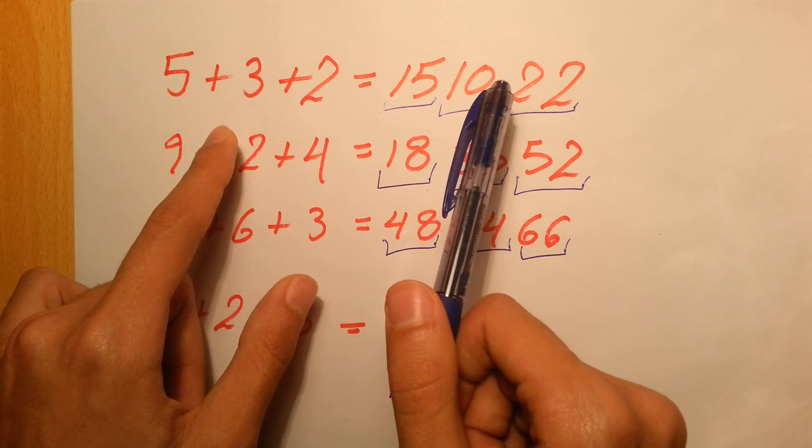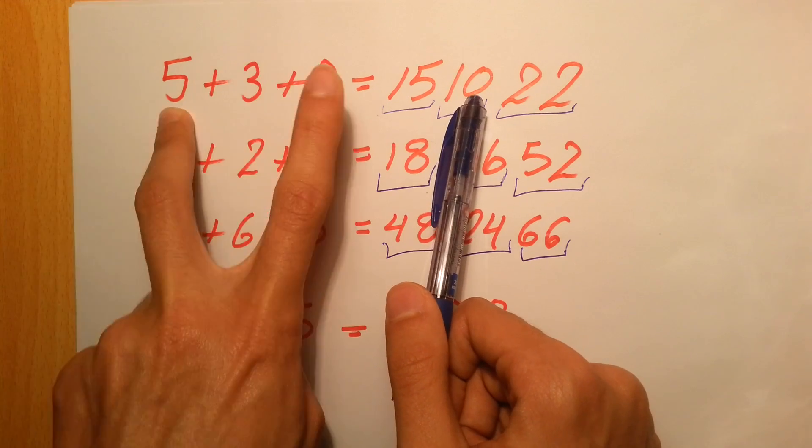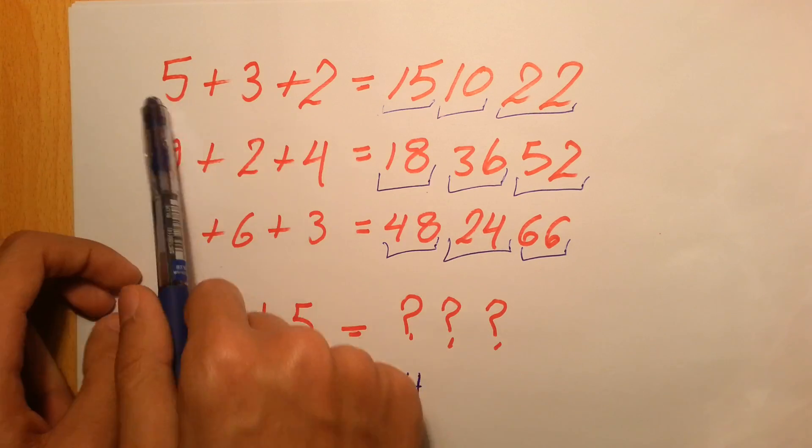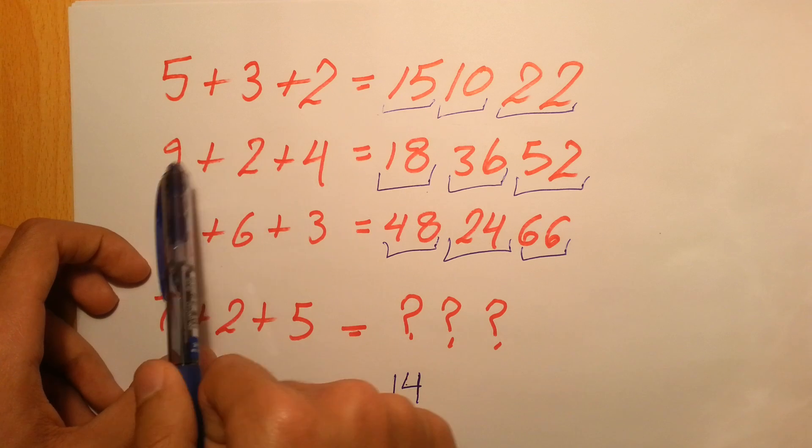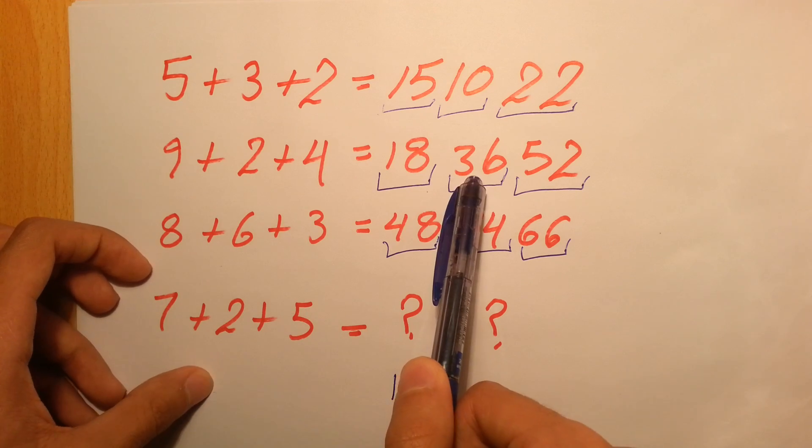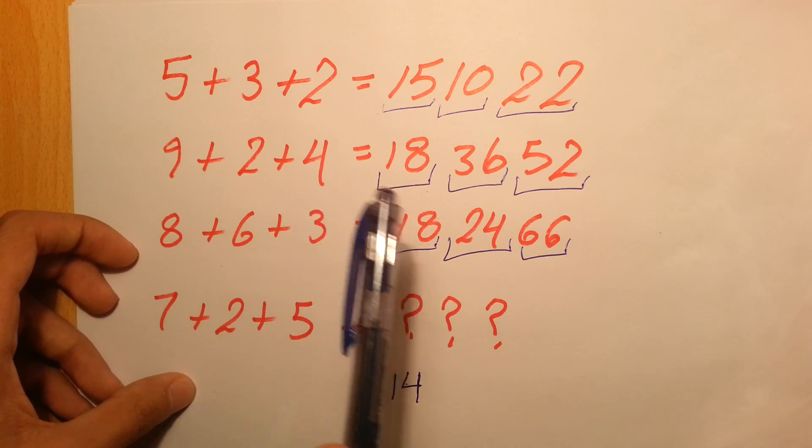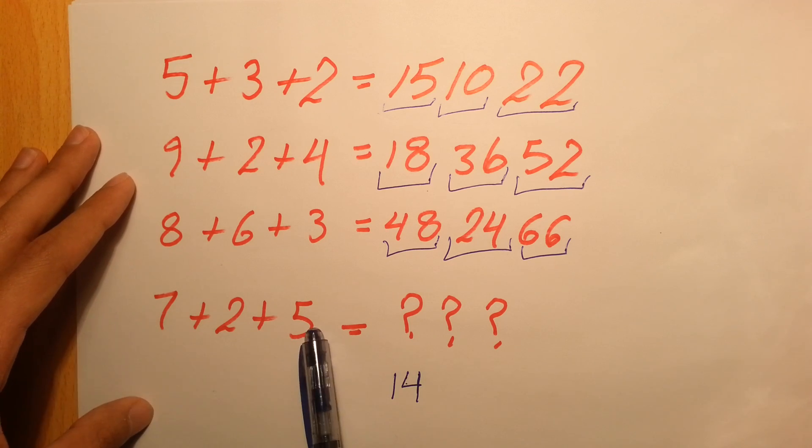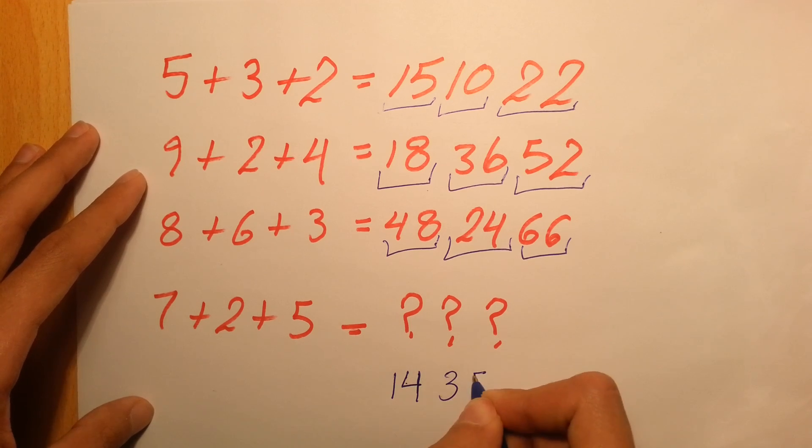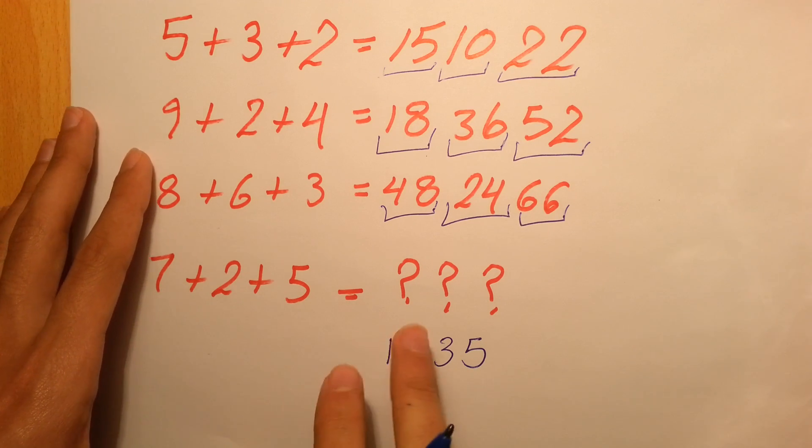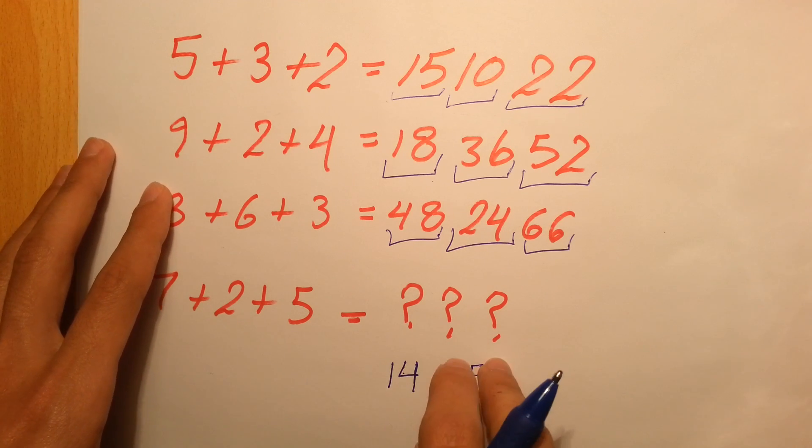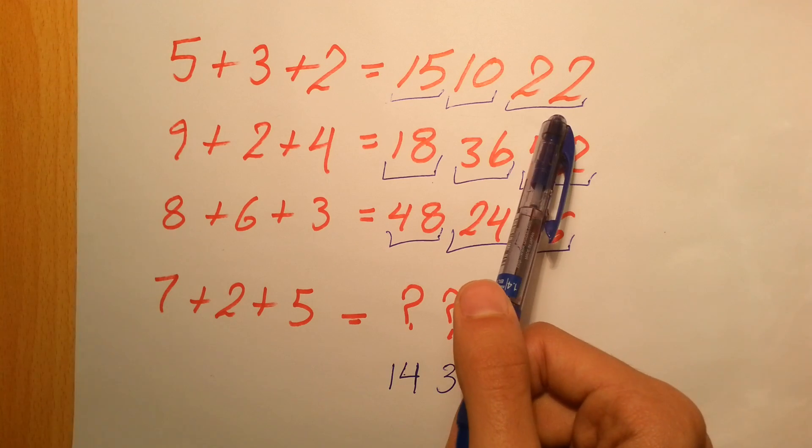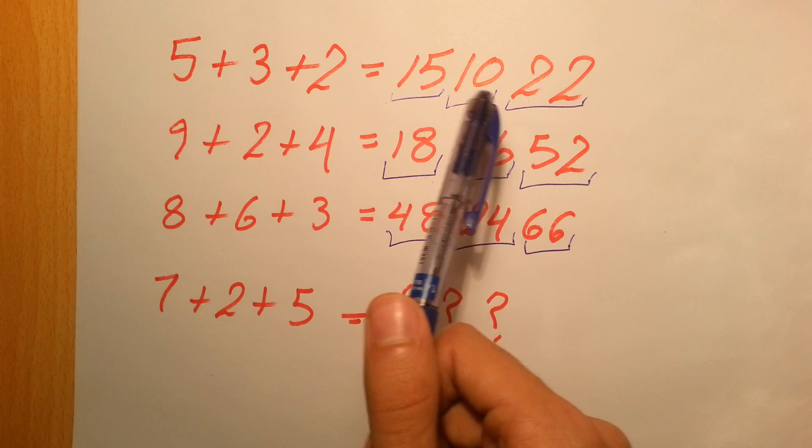Then you can recognize that 10 is the product of the first and the last number. Five times two is 10. Nine times four is 36. Eight times three is 24. Indeed, so you directly say that 7 times 5 is 35.